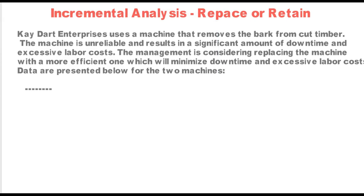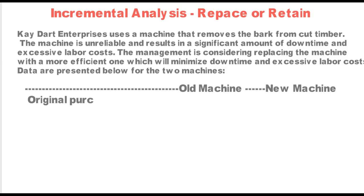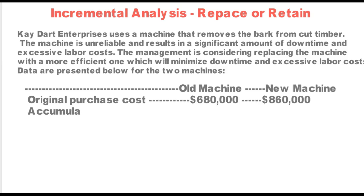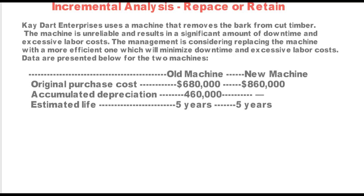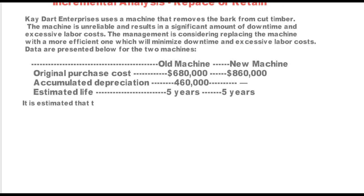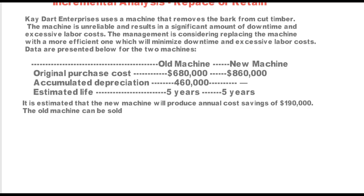Data are presented below for the two machines. We will look at the old machine and then the new machine. The original purchase cost for the old machine is $680,000; for the new machine, $860,000. Accumulated depreciation is $460,000. Estimated life remaining is five years for the old machine and five years for the new machine. That $680,000 original cost for the old machine is a sunk cost. Accumulated depreciation is completely irrelevant.